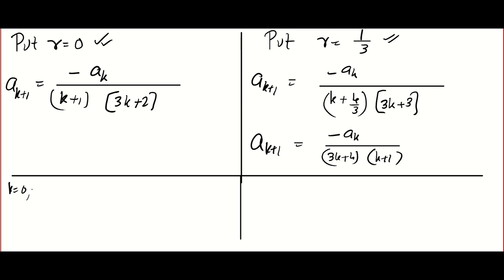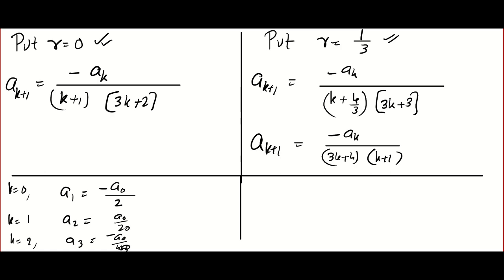For r = 0: putting k = 0 gives a₁ = −a₀/2; k = 1 gives a₂ = a₀/20; k = 2 gives a₃ = −a₀/480. For r = 1/3: putting k = 0 gives a₁ = −a₀/4; k = 1 gives a₂ = a₀/56; k = 2 gives a₃ ≈ a₀/3360. Please confirm these values yourself.